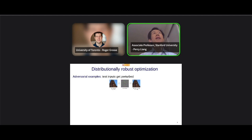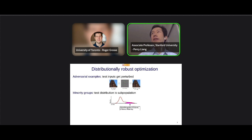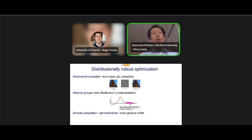This talk is within robust optimization — specifically distributionally robust optimization, which deals with perturbations of distributions rather than individual points. Adversarial examples are a case where each individual point can be perturbed slightly. We'll also look at minority groups, where the test distribution is a subpopulation of the training distribution — for example, patients without a chest drain who nonetheless have a collapsed lung.